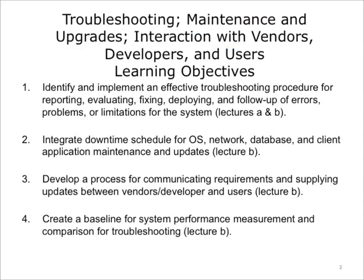The objectives for this unit are to identify and implement an effective troubleshooting procedure for reporting, evaluating, fixing, deploying, and follow-up of errors, problems, or limitations for the system. Integrate downtime schedule for OS, network, database, and client application maintenance and updates. Develop a process for communicating requirements and supplying updates between vendors, developers, and users. Create a baseline for system performance measurement and comparison for troubleshooting.